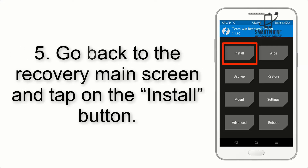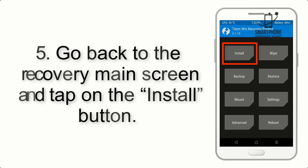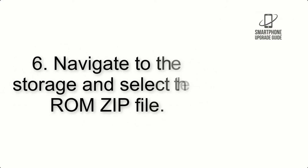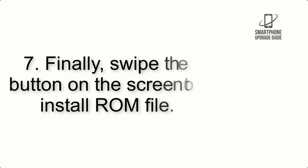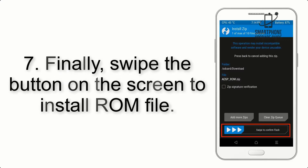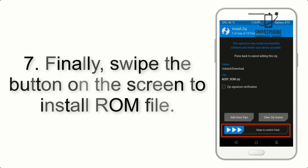Step 5: Go back to the recovery main screen and tap on the Install button. Step 6: Navigate to the storage and select the ROM zip file. Step 7: Finally, swipe the button on the screen to install the ROM file.